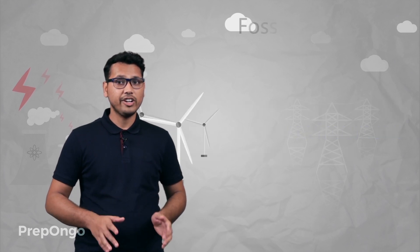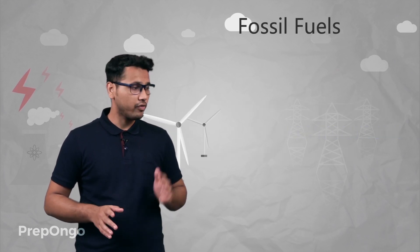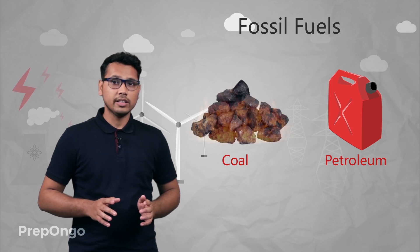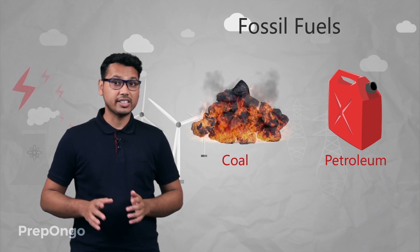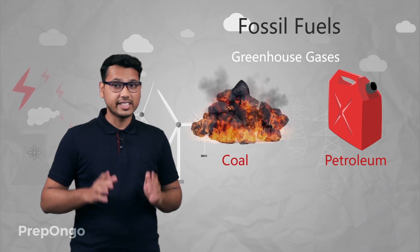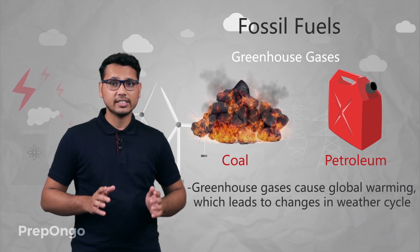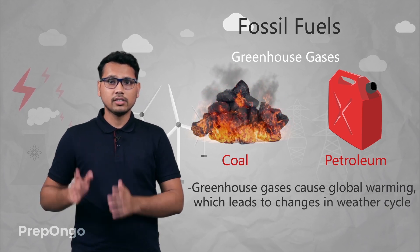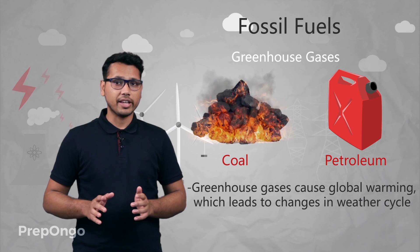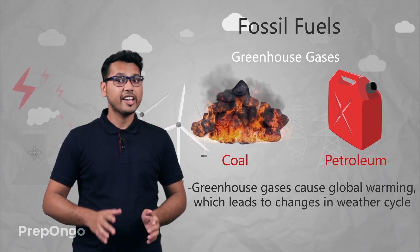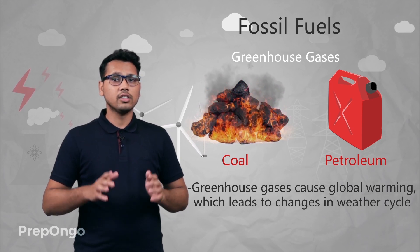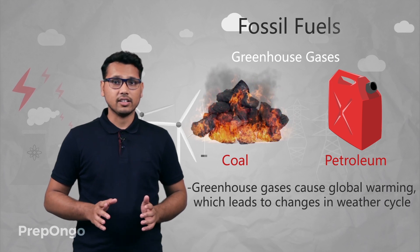If we take the example of fossil fuels like coal and petroleum, they release greenhouse gases on burning. These greenhouse gases cause the global warming of the earth and also cause changes in the weather cycle.